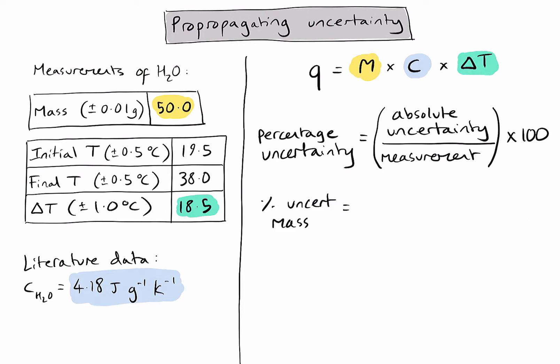I will need to take the absolute uncertainty, which is 0.01, divide it by the measurement, which is 50.0, and then multiply it by 100. And that gives me a value of 0.0002 percent. That sounds pretty small. Let's now find out the percentage uncertainty for the change in temperature. I will need to take the absolute uncertainty, which we calculated to be 1.0, divide it by the measurement value, which was 18.5, and multiply that by 100. This gives me a value of 0.05 percent, plus or minus, that is.